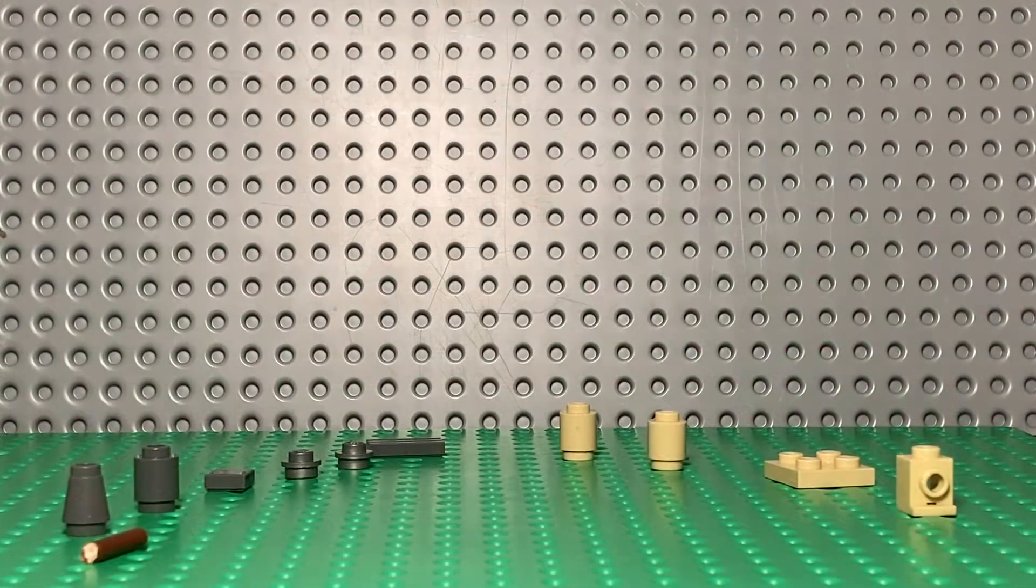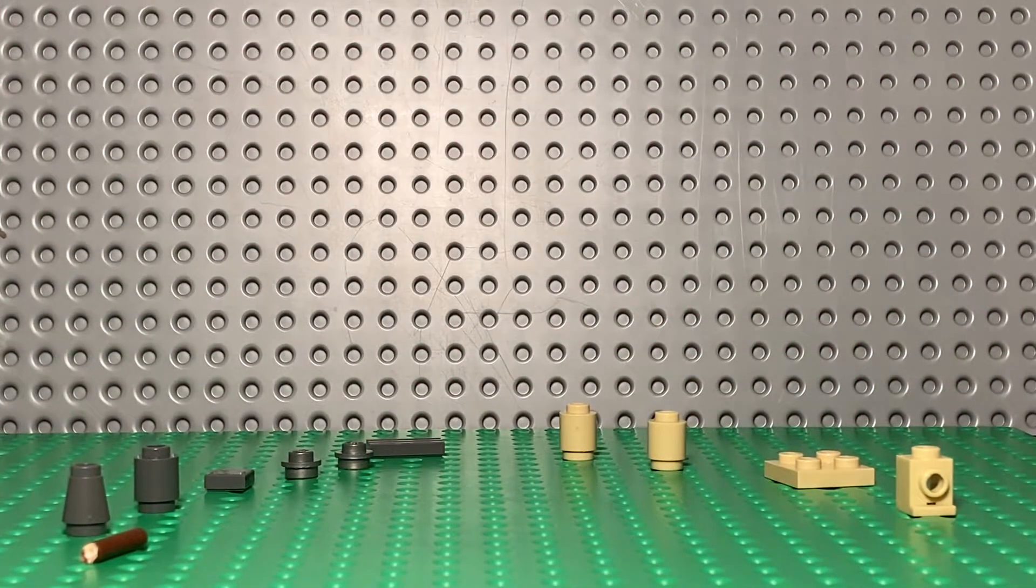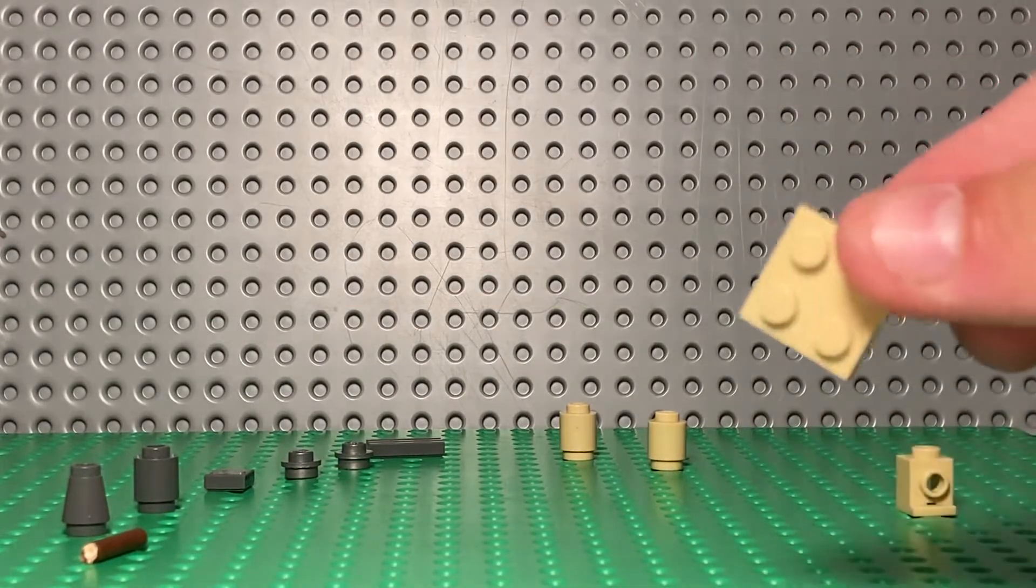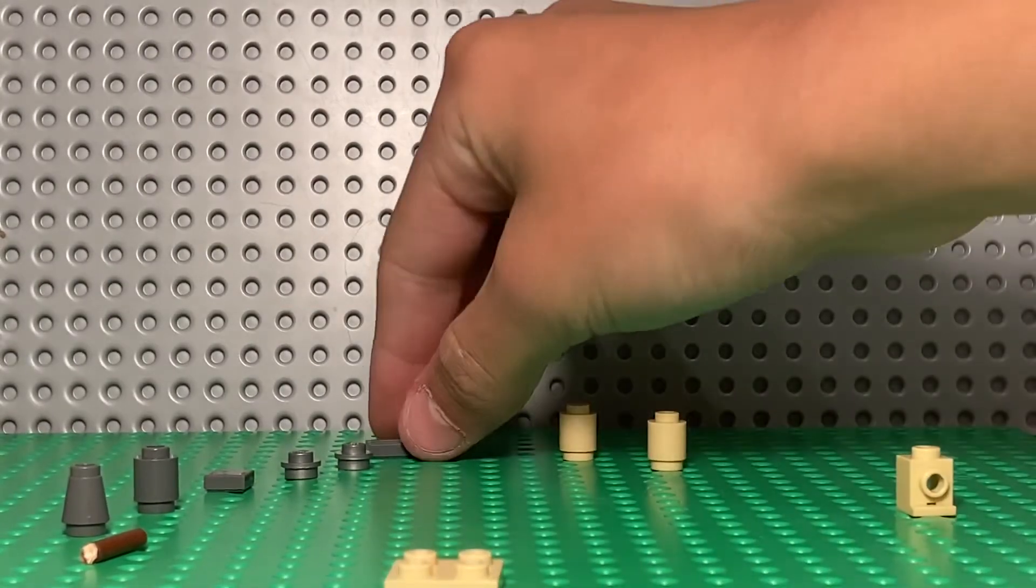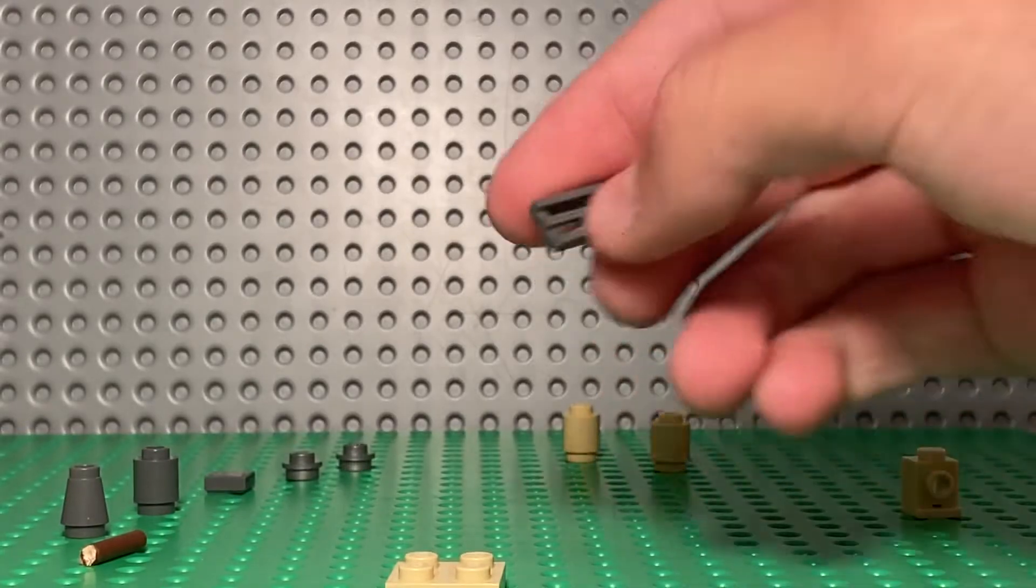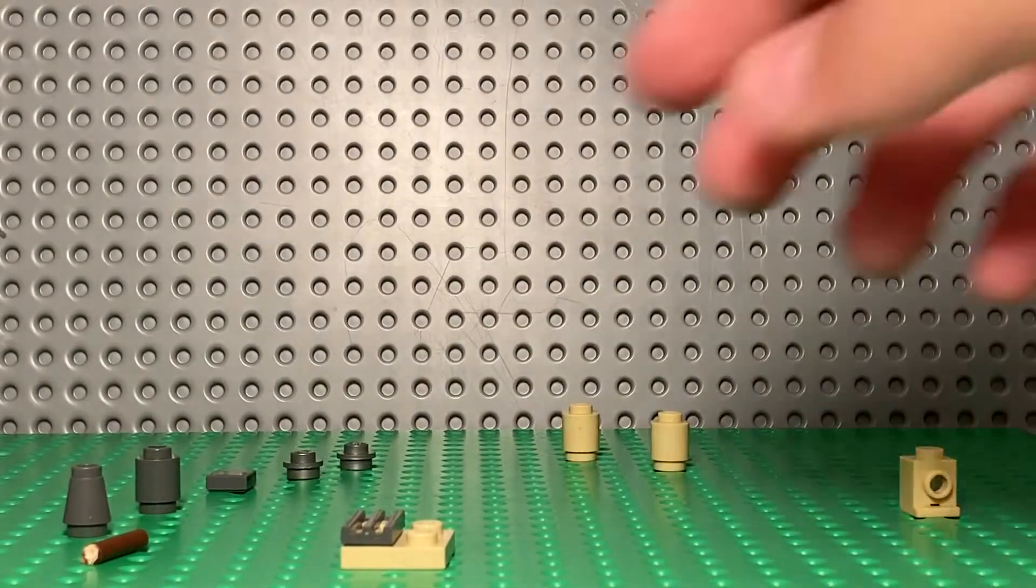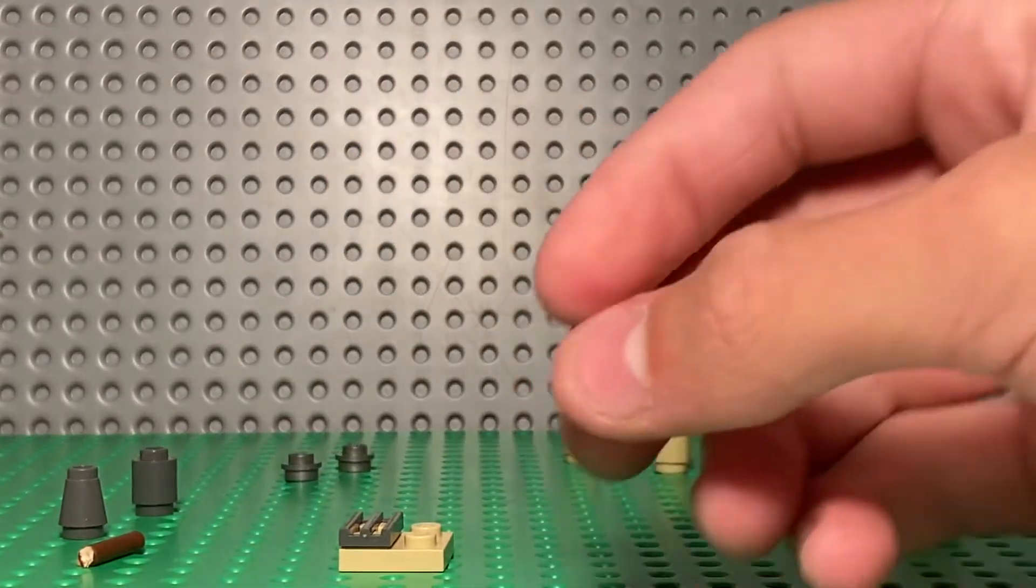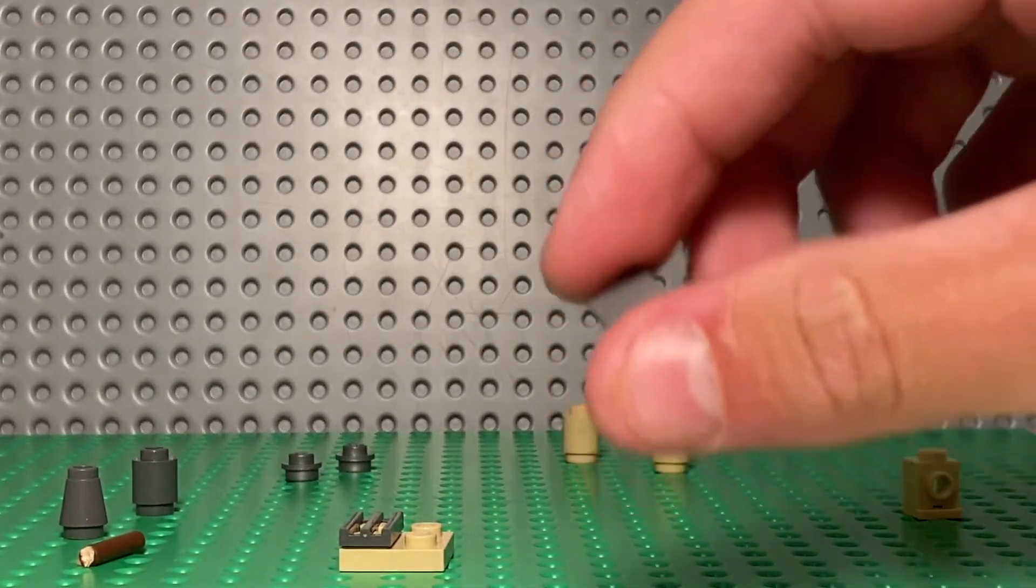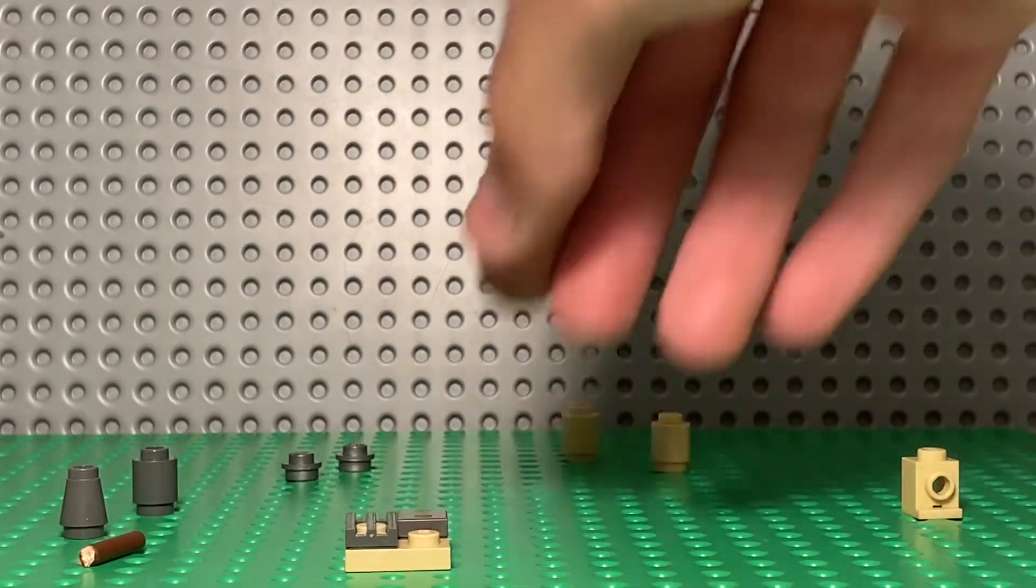Okay, I have my pieces here for the Panzerschreck and I'm gonna take this 2x2 first. I'm gonna put this 1x2 grill piece, it's in dark gray or bluish gray, and then this 1x1 bluish gray plate.